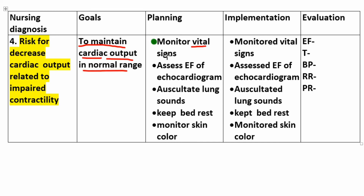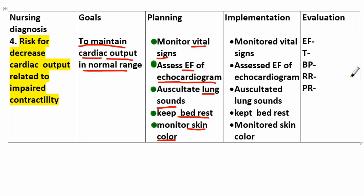For decreased cardiac output: auscultate lung sounds, keep patient with rest, monitor skin color, monitor vital signs, and assist with ejection fraction via echocardiogram. Implementation: auscultate lung sounds, keep with rest, and monitor skin color.